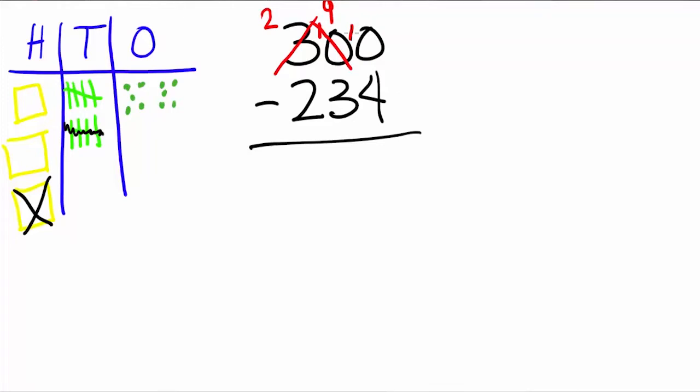Now, going back to our base 10 blocks, we'll take away a value of 234 blocks from our base 10 blocks. I can take 200 or 2 blocks here, 3 tens from here, and finally 4 ones from here. Counting our remaining base 10 blocks, I find I have 66.